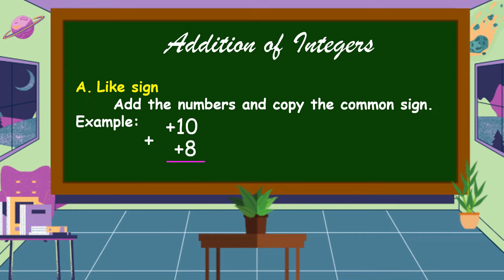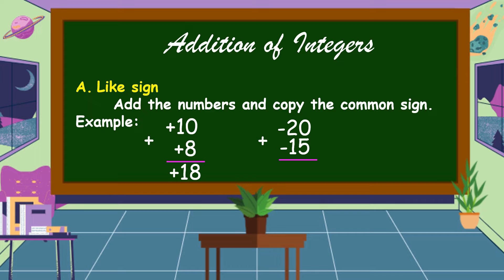Our addends are both positive, so we are going to add the numbers. 10 plus 8 is equal to 18, and copy the common sign which is positive. Therefore, the answer is positive 18. Another example: negative 20 plus negative 15. Our addends are both negative, so we add the numbers and copy the common sign which is negative. Therefore, the answer is negative 35.